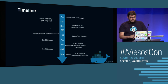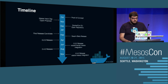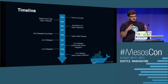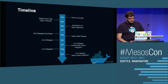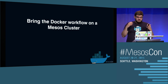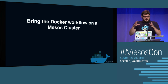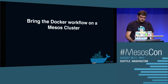Quick timeline: Swarm started in October last year as a proof of concept, and around June we released the first Mesos integration. It's experimental for now, and we aim to have this integration stable by the end of the year. The goal of the Mesos integration in Swarm is to bring all the Docker workflow and all the Docker tools you know to your Mesos cluster.